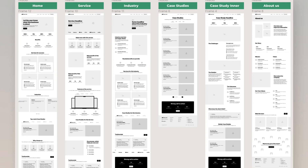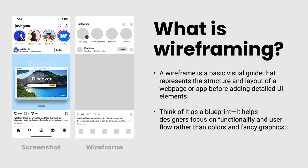In simple terms, we have a blueprint for UI design. So in this example, we have two screens — one is an Instagram screenshot, the final UI design, and another one is a wireframe.